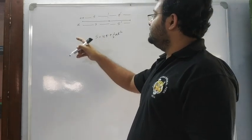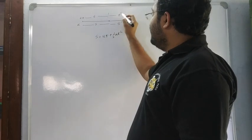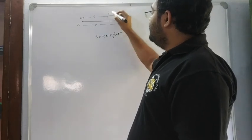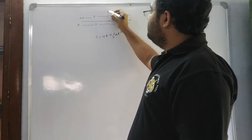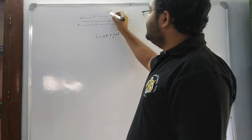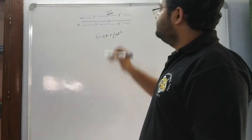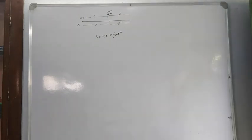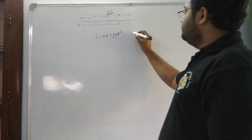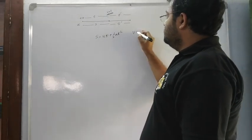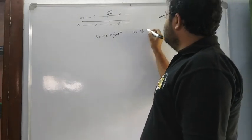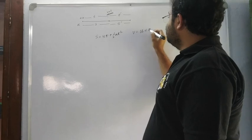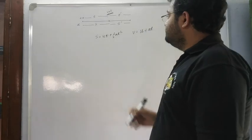For the next part, the initial velocity changes to V, where V is equal to U plus AT.